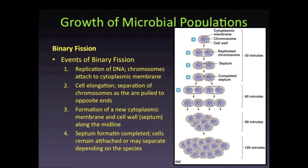The copies of the bacterial chromosome are separated as the bacterial cell continues to grow and elongate. Because the chromosomes are attached to different sites on the bacterial cell membrane, the chromosomes are pulled apart as the cells continue to grow.